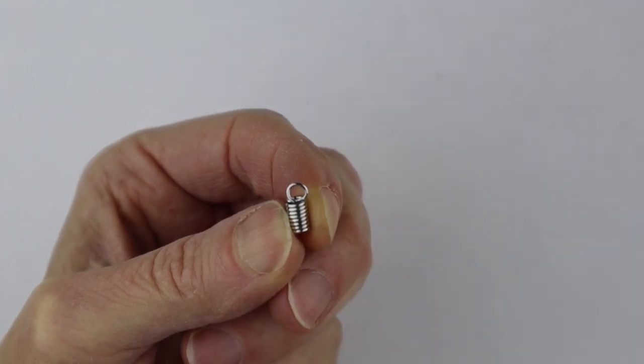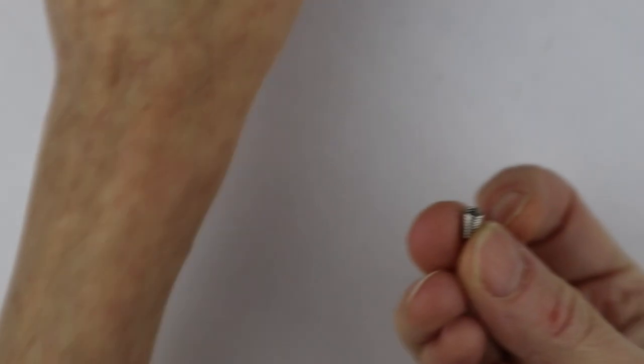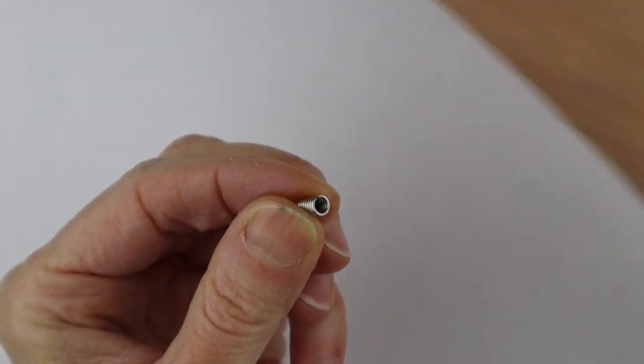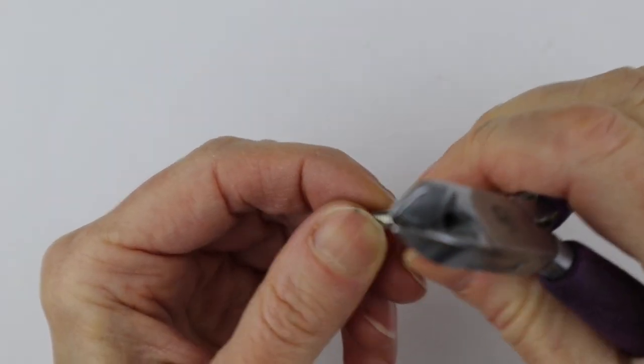If you can't find the springs with loops, you could get these little springs. What I do for that is I just open up the end, so without cutting it, I use the cutters just to split it a little bit like that.